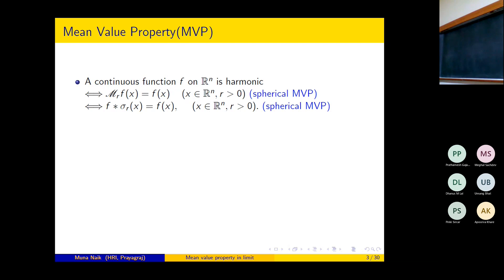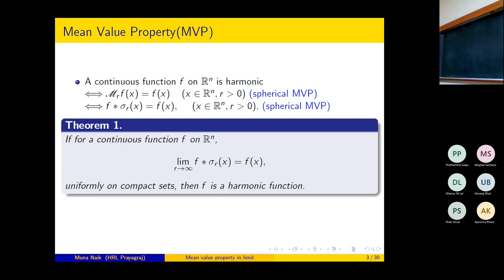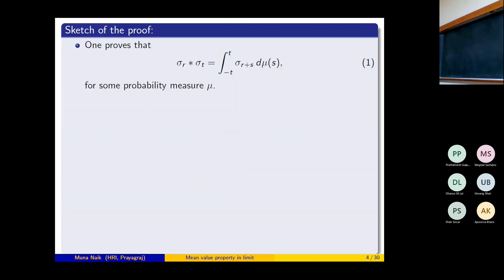We are discussing an asymptotic mean value property. A continuous function f on ℝⁿ satisfies: if the limit as r tends to zero of the convolution σ_r * f(x) equals f(x) uniformly on compact sets, then f is harmonic. This result was proved by Weiss only for ℝ² originally, although the question makes sense for any general ℝⁿ. One can utilize his idea to give a proof in the case of ℝⁿ.